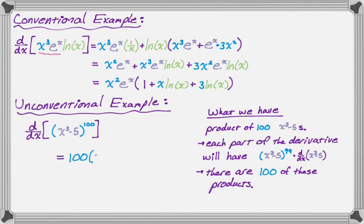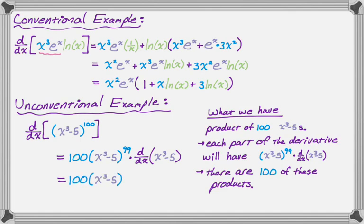So x cubed minus 5 to the 99th, times the derivative of x cubed minus 5. The derivative of x cubed minus 5 is 3x squared. So the final derivative, using this very general form of the product rule, gives us 300x squared times the quantity x cubed minus 5 to the 99th. It's a neat application of the product rule that maybe you haven't thought of before. I hope you found this helpful and good luck.